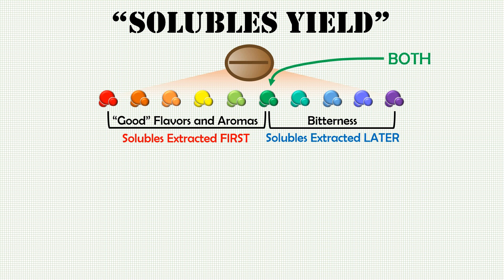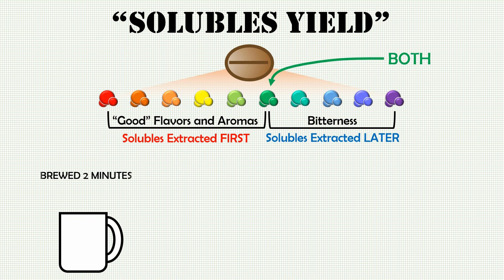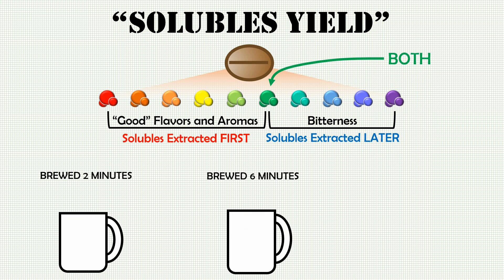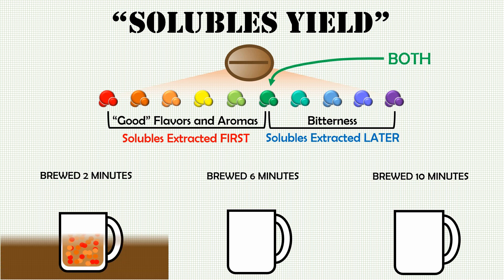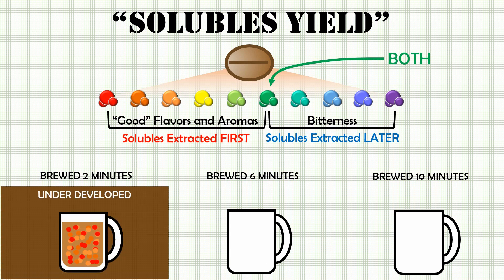Let's say we have three cups of coffee: the first brewed for two minutes, the second brewed for six minutes, and the third brewed for ten minutes. Most likely, the cup brewed for two minutes is going to be an underdeveloped cup of coffee. You can see that we have reds and oranges, but we don't have the light greens, yellows, or even the dark greens that are going to really round out the flavor of the coffee.